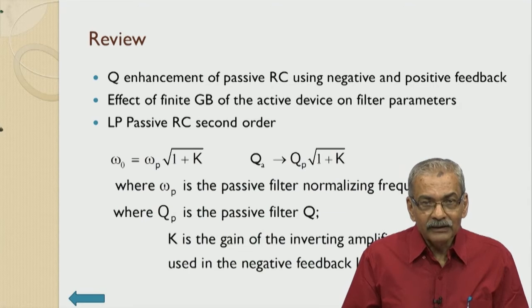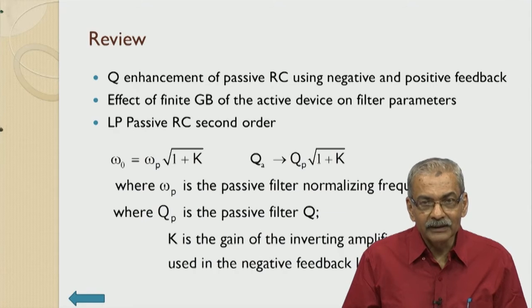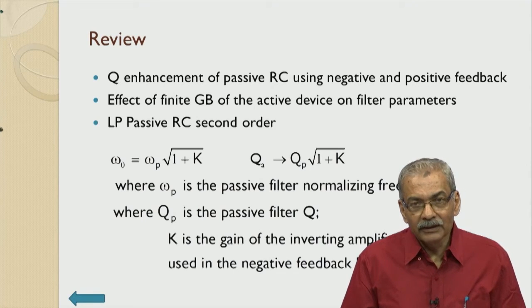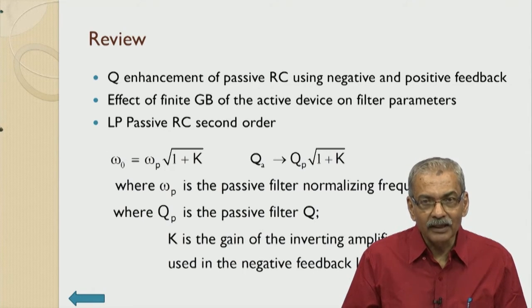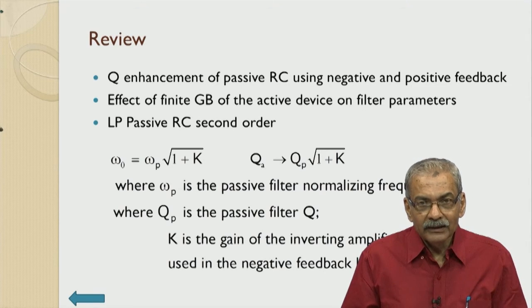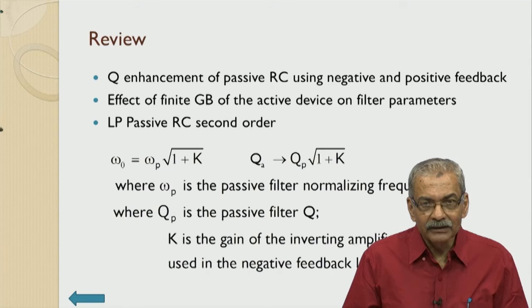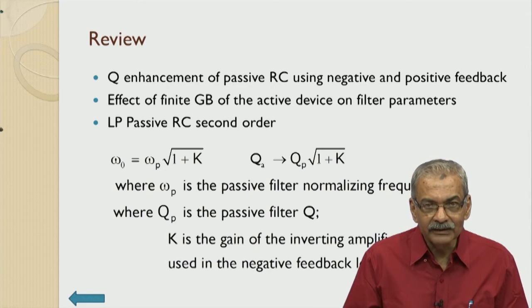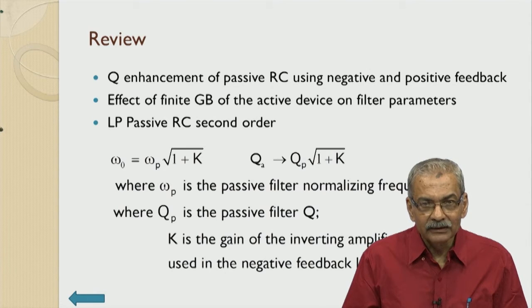The effect of the most important parameter of the active device — whether it is an op amp or transistor — is the gain bandwidth product. In the case of a transistor it is the GM by C product, which actually gives the quality of the active device. The effect of this active parameter on the performance of the filter was also discussed in the earlier class.